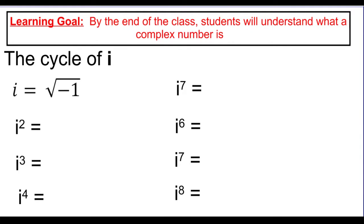Now we need to deal with how exponents work when talking about i. We're going to talk about something called the cycle of i. Starting from the definition, i is the same thing as the square root of negative 1. So i squared is the square root of negative 1 times itself, which is just negative 1. When you square a square root, they cancel out — so i squared equals negative 1.